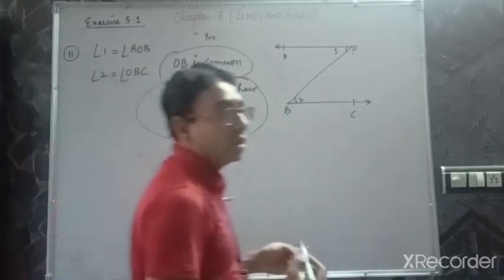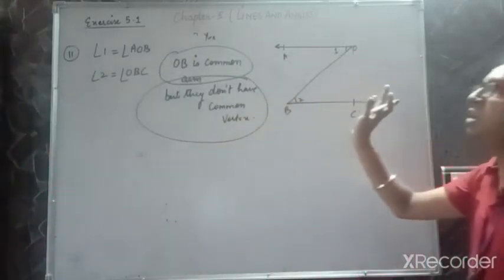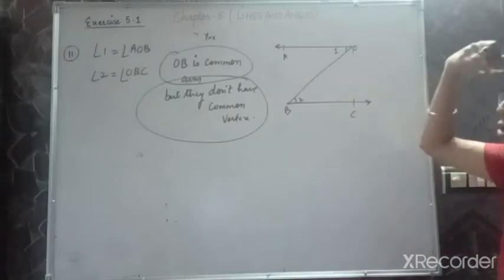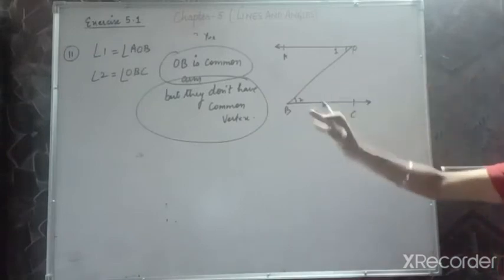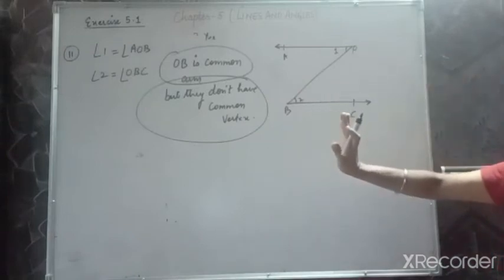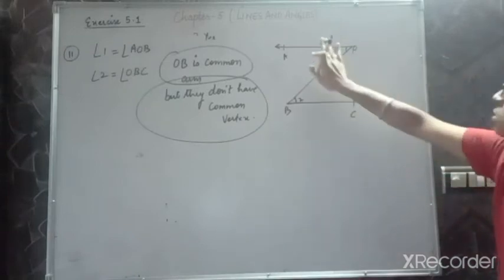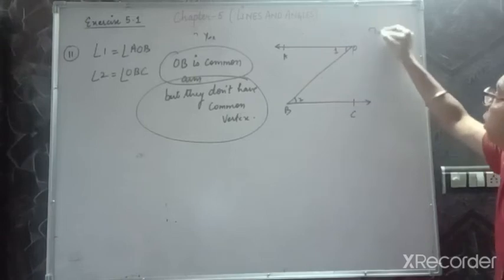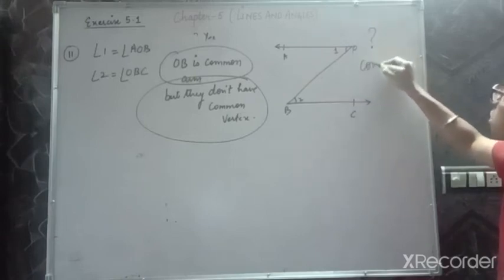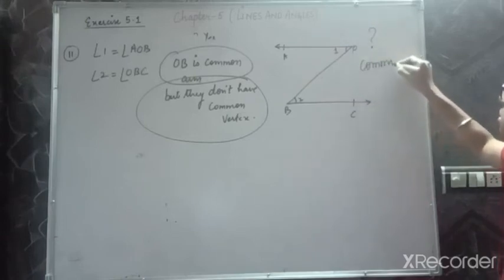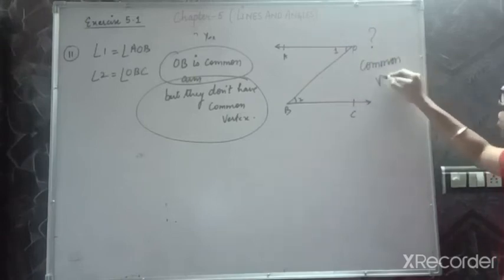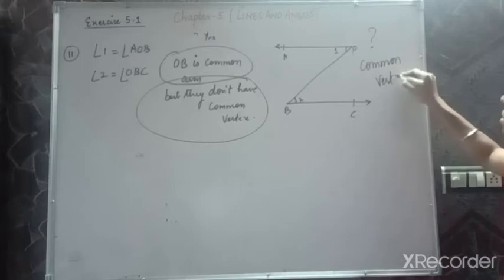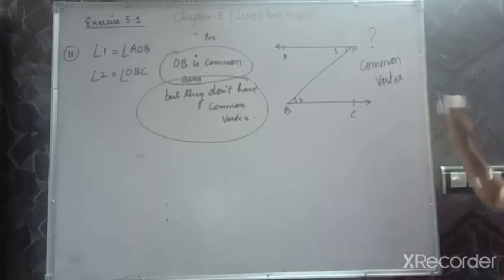If common vertex is not there, you cannot even talk about non-common arms. The very first condition was common vertex. So they are not adjacent angles. Clear? Any doubts?